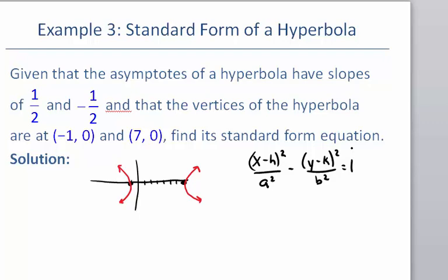The first thing I need to do is determine the center of the hyperbola. The center is going to be located equidistant between the two vertex points. If I count the distance between my vertices, there are 8 units between the two vertex points, so halfway in the middle would be 4 units. Counting back 4 from the right vertex puts the center at the point 3, 0.